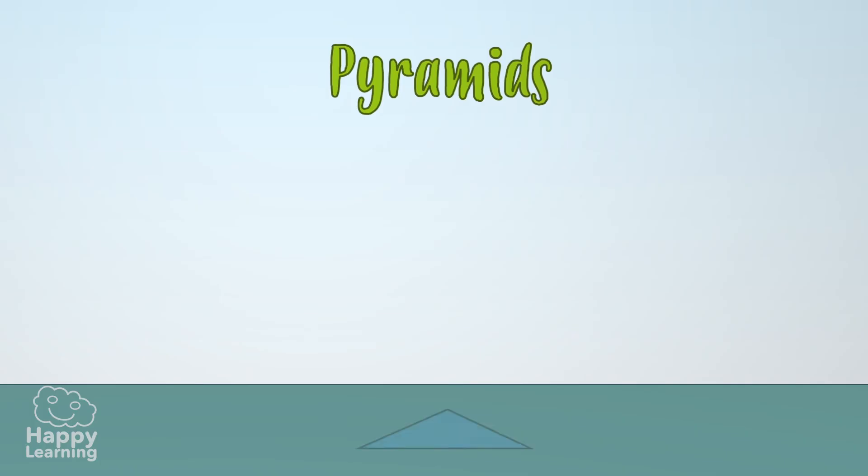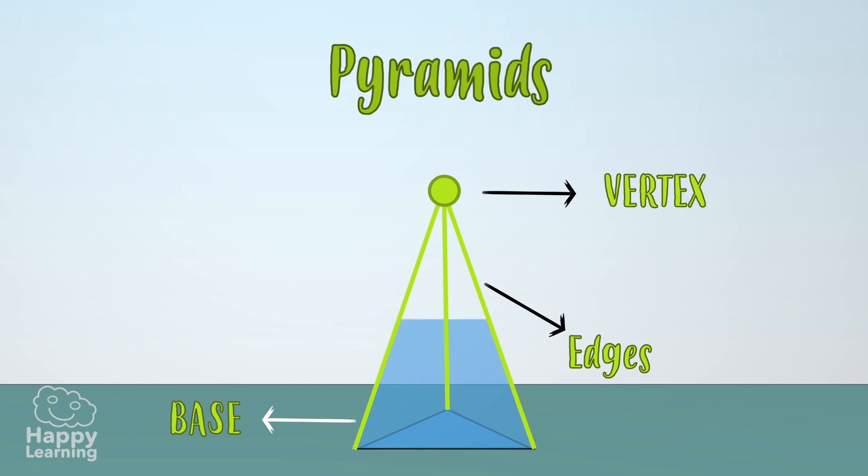The pyramids have a single base and a common vertex where the edges of the lateral faces meet, so it is clear that the lateral faces will always be triangular.